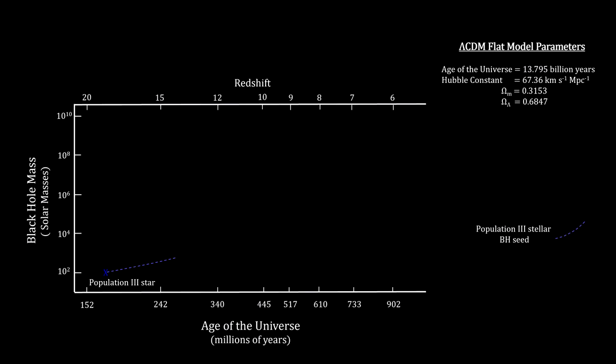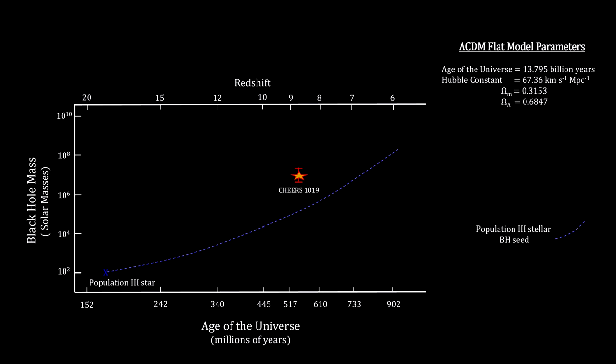Here's a graph put together by the Sears team that shows how, starting with the first population three stars, a standard black hole seed would grow over time. Note that there wouldn't be any million solar mass black holes until around 625 million years after the Big Bang. But Sears 1019 has 9 million solar masses and existed just 570 million years after the Big Bang. Either the Big Bang timeline is wrong, or there's another way for supermassive black holes to form. Theories that stretch the Big Bang timeline abound, but none of them have gained much traction.